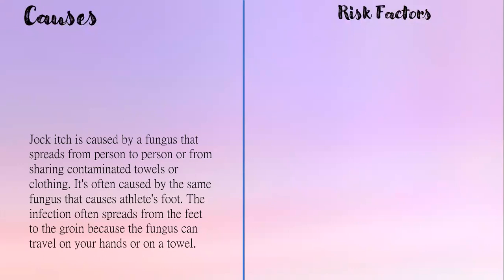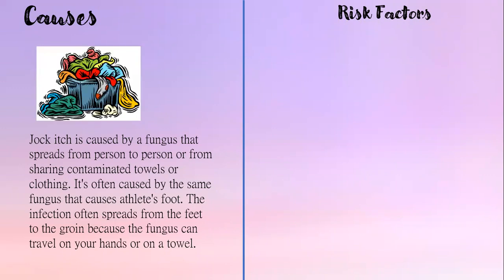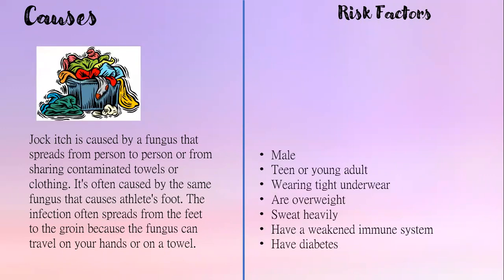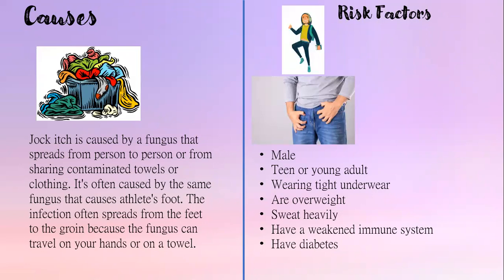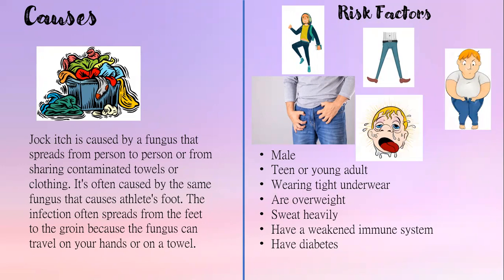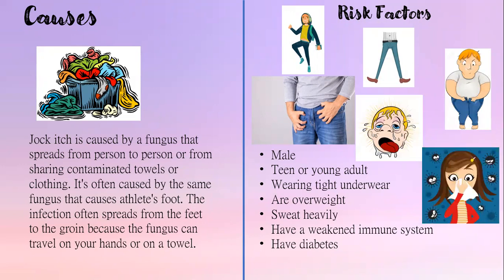Tinea cruris is caused by a fungus that spreads from person to person or from sharing contaminated towels or clothing. The infection often spreads from the feet to the groin because the fungus can travel on the hands or on a towel. Risk factors include being male, teen or young adult, wearing tight underwear, being overweight, sweating heavily, having a weakened immune system, and having diabetes.